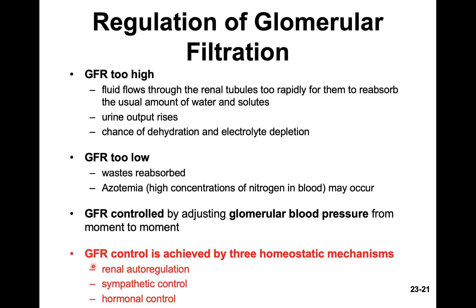If the kidneys sense the GFR is too high, they can adjust to lower it; if it's too low, they'll increase it. There are three ways to control GFR: renal autoregulation (the kidney regulates itself — 'renal' means kidney, 'auto' means self), sympathetic control systems (the nervous system), and hormonal controls. We've touched on hormones before and will definitely learn about the main hormones that affect your kidneys.